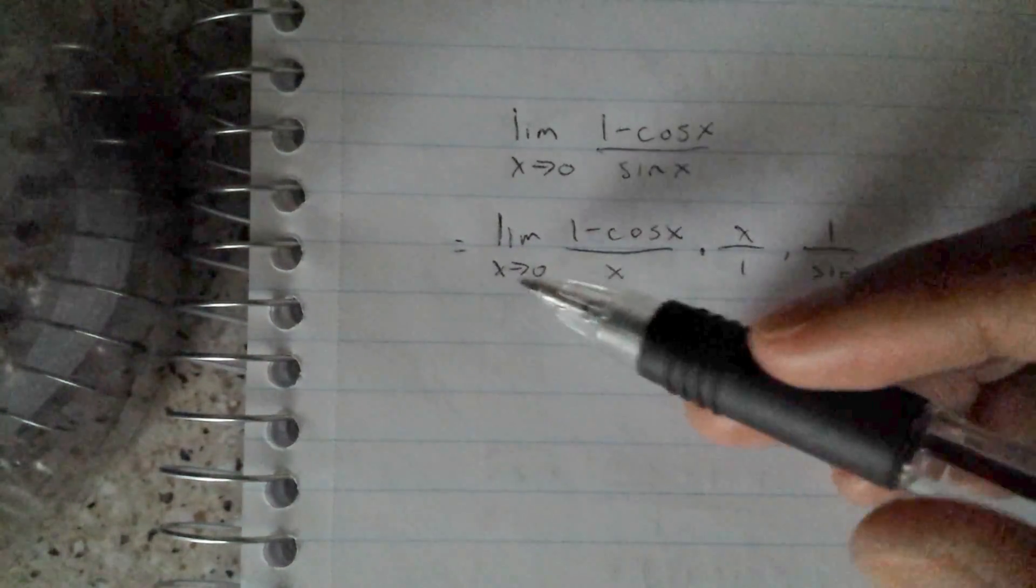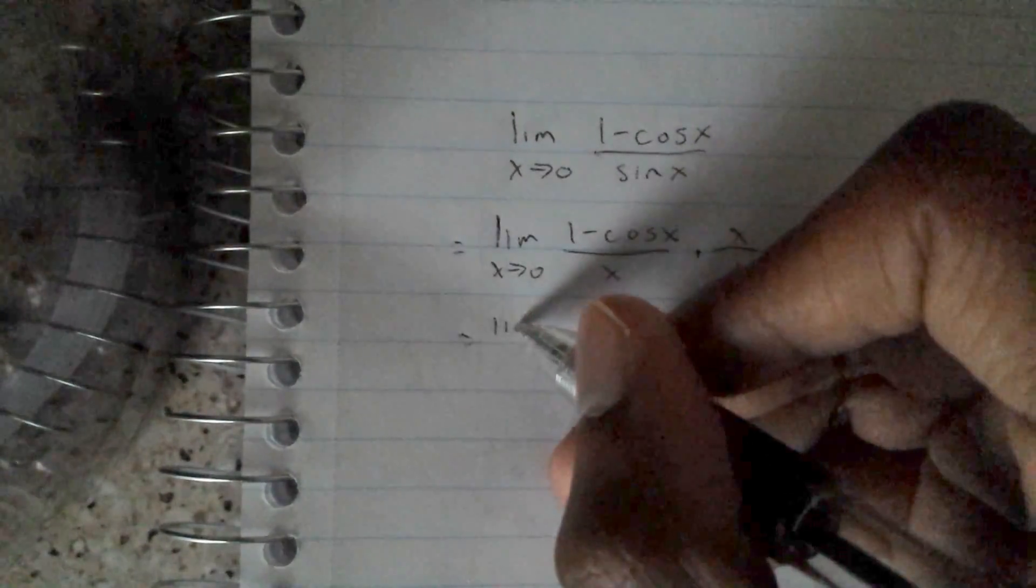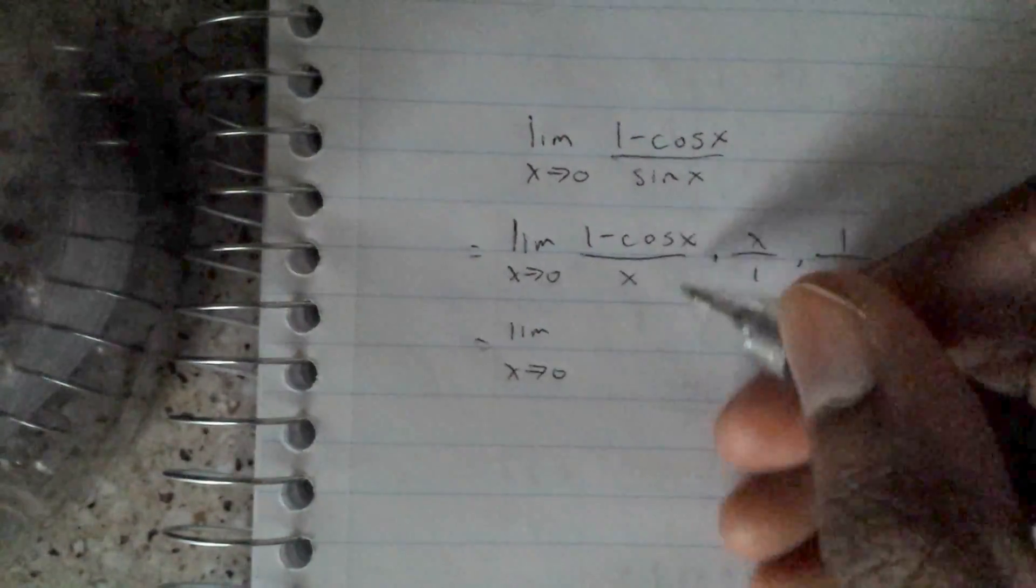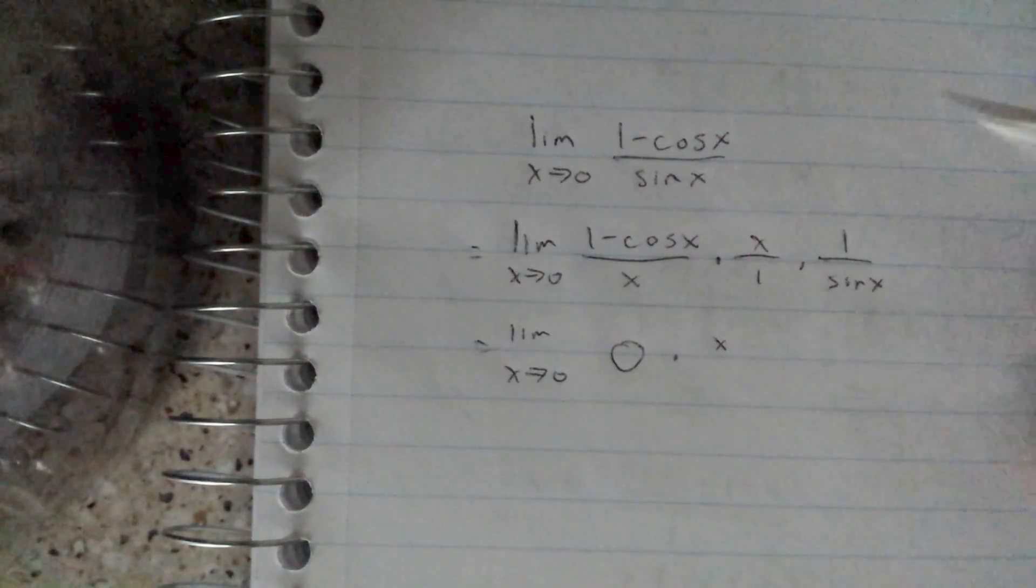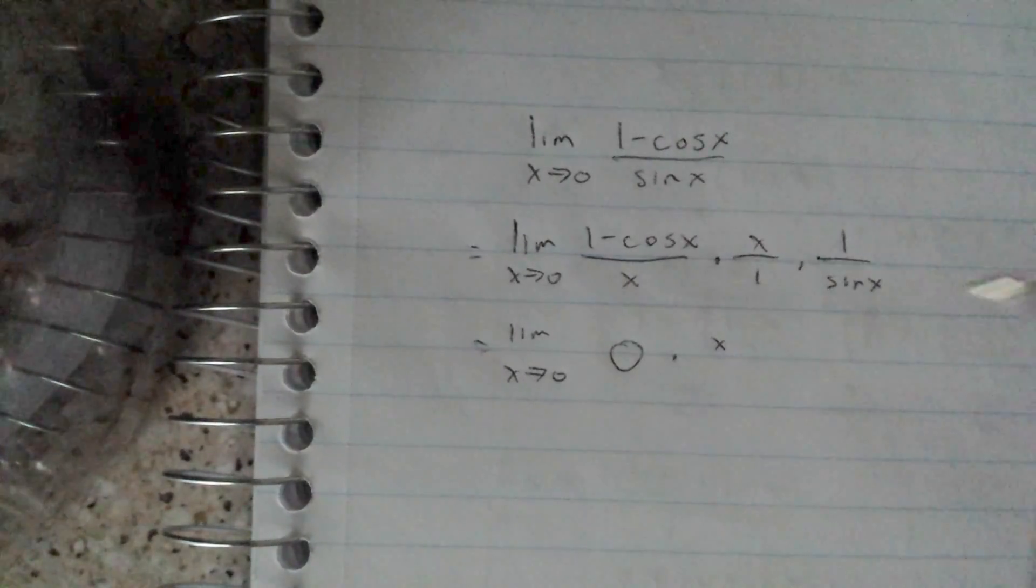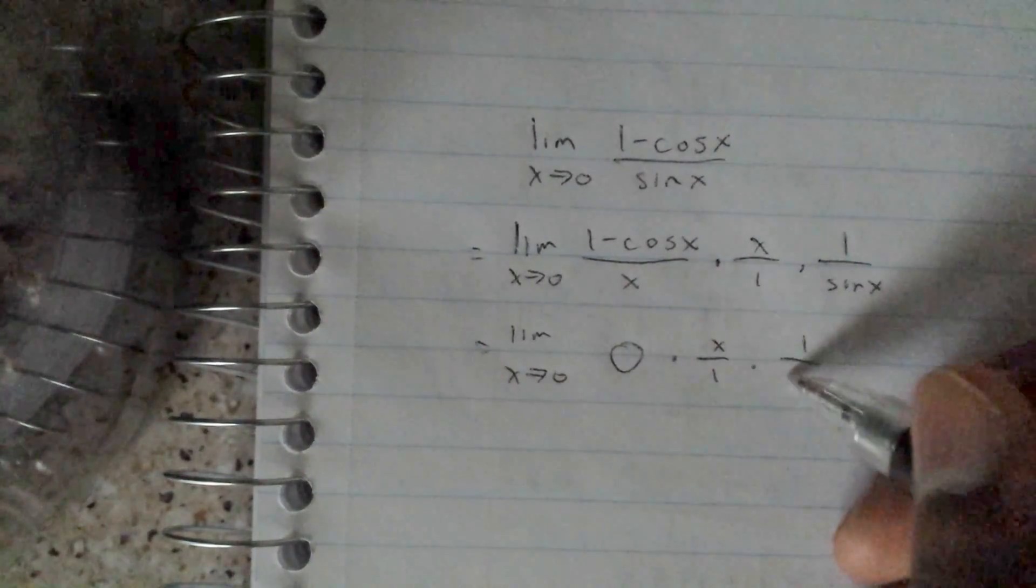Since it's approaching 0, this goes to 0. Anything multiplied by 0 is just 0. So all of this is just 0. Everything multiplied by 0 is 0. We can just rewrite it.